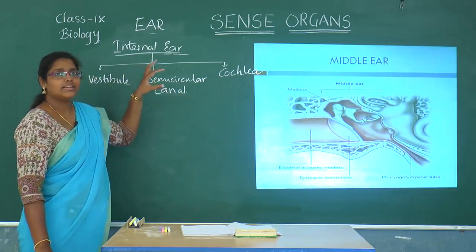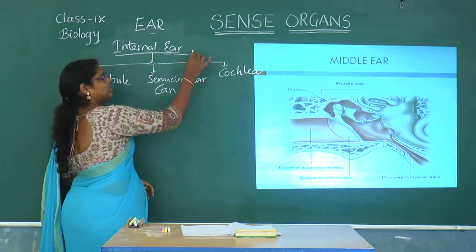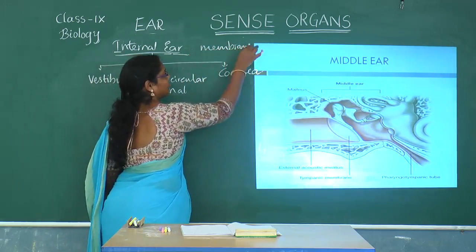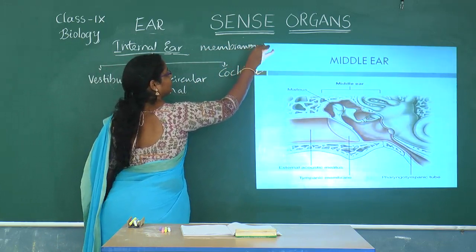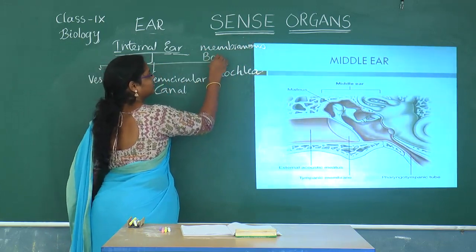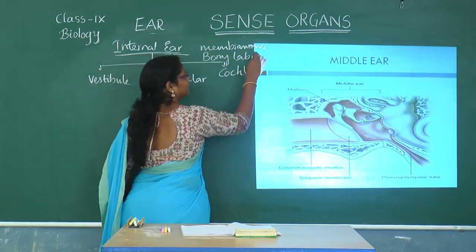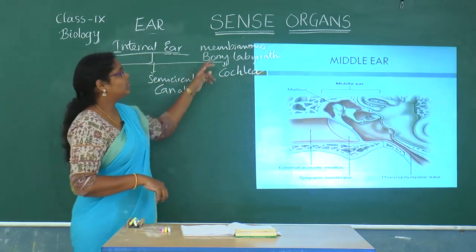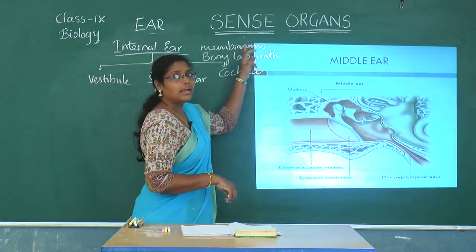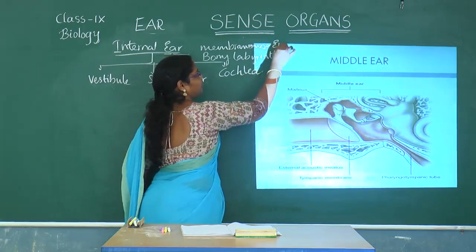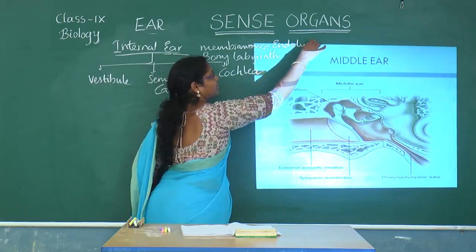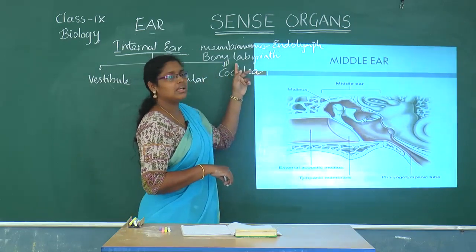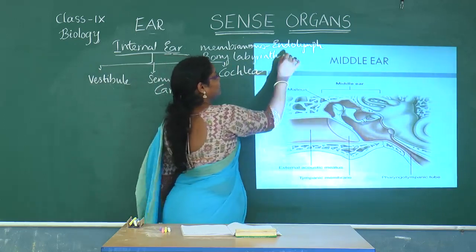The internal ear is separated into two parts: the membranous labyrinth and bony labyrinth. The fluid present in the membranous labyrinth is endolymph, and the fluid present in the bony labyrinth is perilymph.